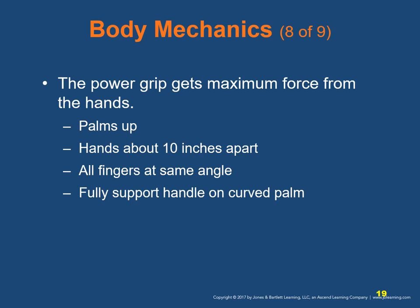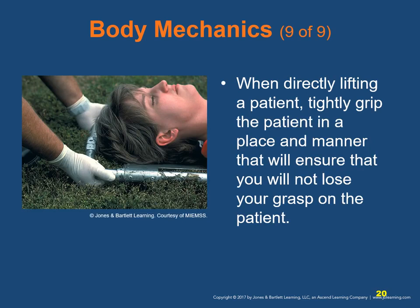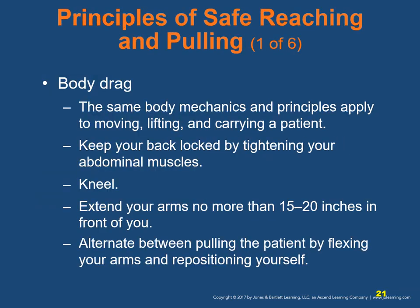Hold your arms so your hands are almost adjacent to the plane described by your anterior torso, and keep the weight you are lifting as close to your body as possible. Keep your arms the same distance apart as when hanging at your sides. When directly lifting a patient, tightly grip in a place and manner that ensures you will not lose your grasp. For a body drag, keep your back locked in a tight curve by tightening your abdominal muscles. Kneel to minimize how far you lean over, and extend your arms no more than 15 to 20 inches in front of you. When you can pull no further, stop and reposition back another 15 to 20 inches, alternating between pulling and repositioning.